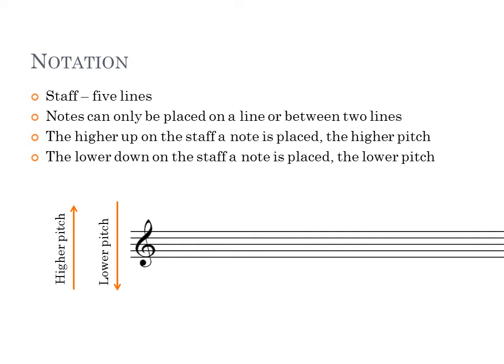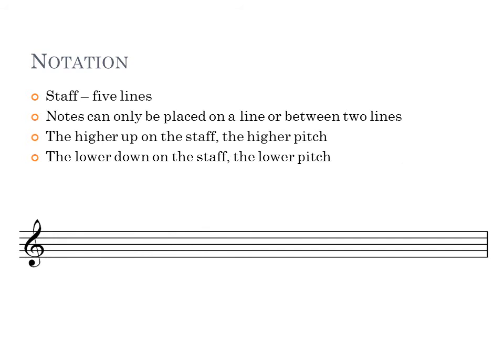That gives us a certain number of notes we can reach — five lines and some gaps in between. But obviously we have more notes on many different instruments. So if we reach the top line and want to go further towards a higher pitch, we can simply keep going past the staff by adding an extra line called a ledger line. We write notes on ledger lines the same way — either on the line or in between. We can also add ledger lines below for lower pitches, adding as many as needed.